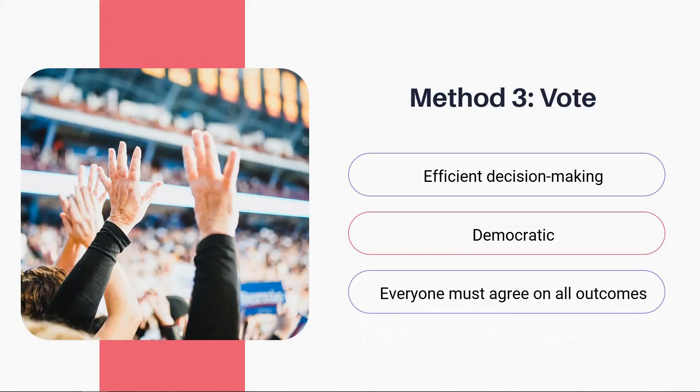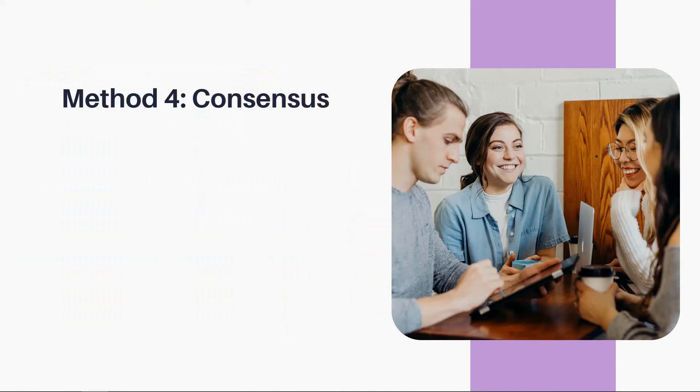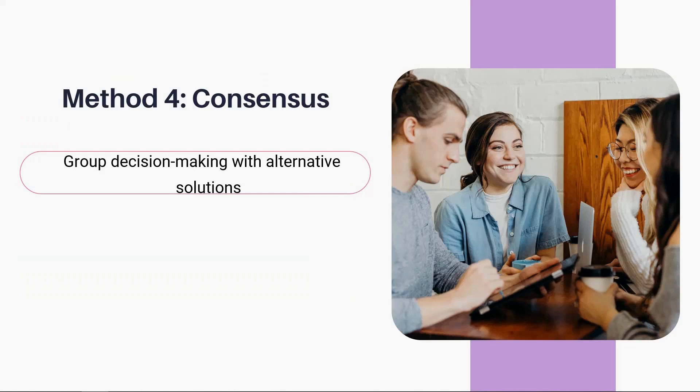When team members cannot agree on possible outcomes, the consensus method is required. The consensus method requires group decision-making and suggesting alternative solutions. The group will discuss all ideas until they reach an agreement. It can easily be very time-consuming and, if misapplied, may take multiple meetings to conclude.